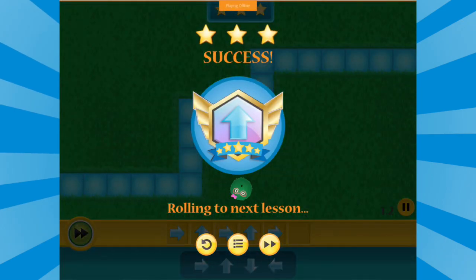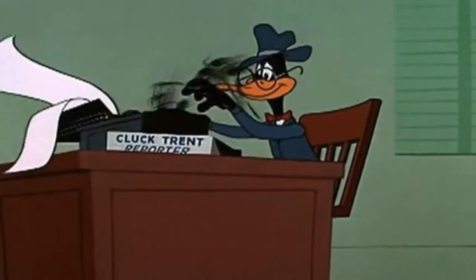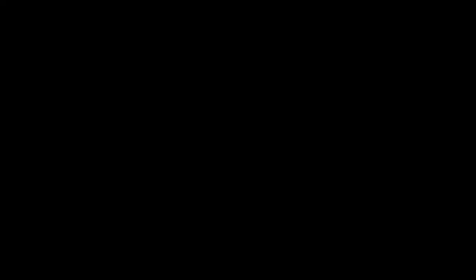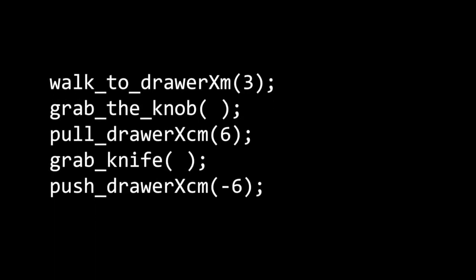Computers read in a certain order, similar to a typewriter which can only go left to right and top to bottom. A computer has to read code in order. If the sequence of the commands is incorrect, the computer won't be able to follow the instructions.